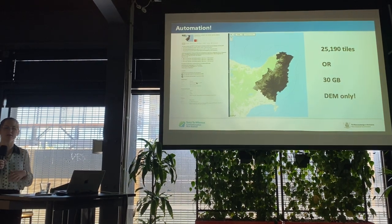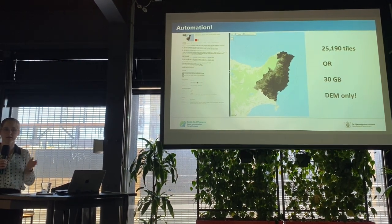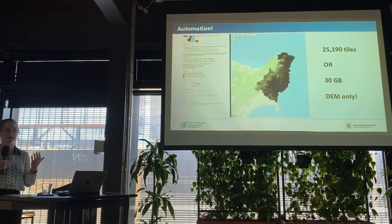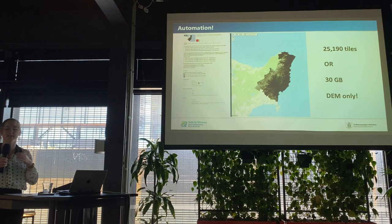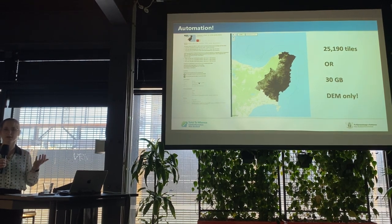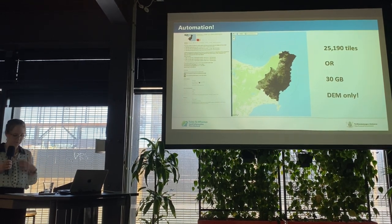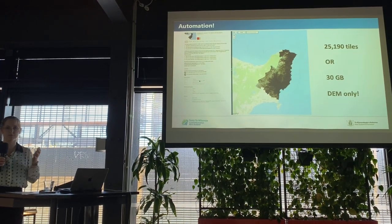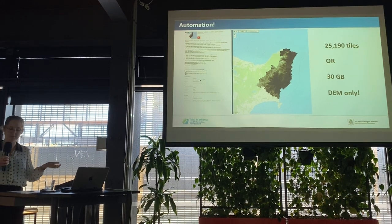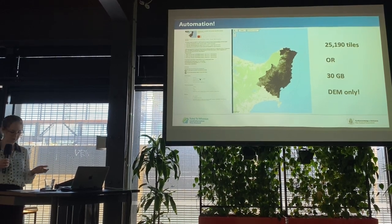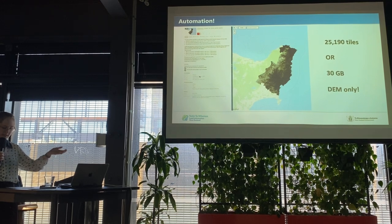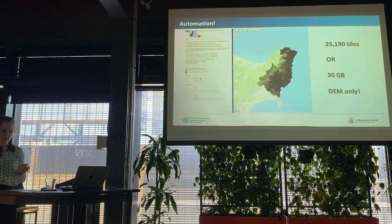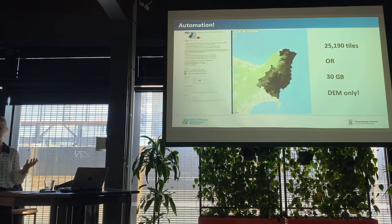The LiDAR we receive is tiled to a 1:1K tile index. For regional scale data sets we typically get around 5,000 to 10,000 tiles, but we can get up to 40,000 tiles. Our QC process can be done manually through spot checking, but with big regional scale data sets we often miss a lot of issues. Creating scripts has allowed us to check every tile in the data set so we can be confident whether it passes or fails.